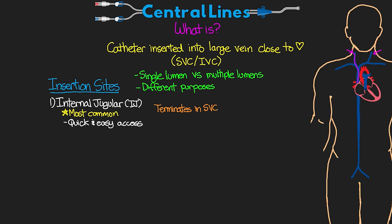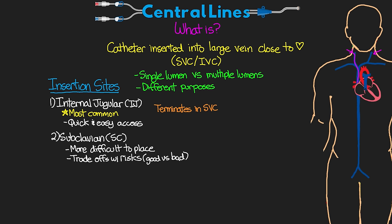The next insertion site is the subclavian. I actually see this site used less and less, as it's generally a little bit more difficult to place. It does have some trade-offs with risks — both good and bad — which I'll talk about shortly. This catheter is inserted into either the right or left subclavian vein, and again the tip terminates in the SVC. If we're inserting on the left, we generally use a slightly longer catheter.